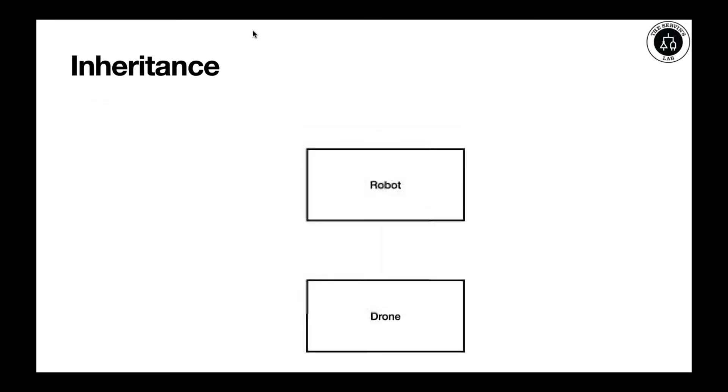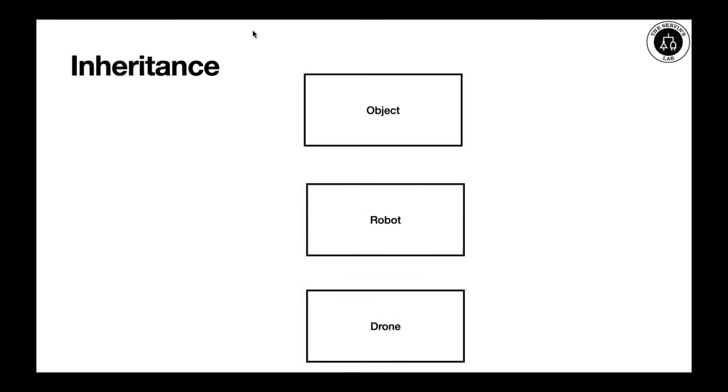It means that drone will now take place in this hierarchy in Java that we already know. In other words, drone will inherit all the attributes from robot, but robot will inherit all the attributes from our class object. Now we have this hierarchy that we have established by using extends.